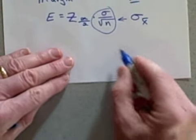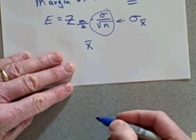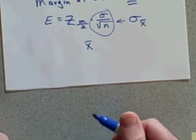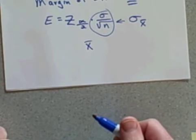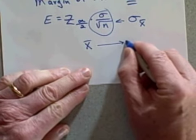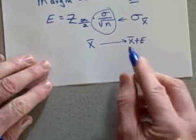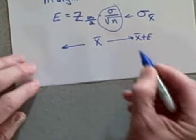So we'll be starting with x̄, the sample mean—we have to base this interval on something, and we base it on the information we get from the sample. We're going to add to it the margin of error to get the upper end, and we're going to subtract from it the margin of error to get the lower end.